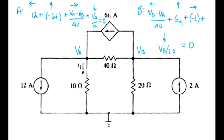So right now, in terms of our unknowns, we have the two node voltages, VA and VB.